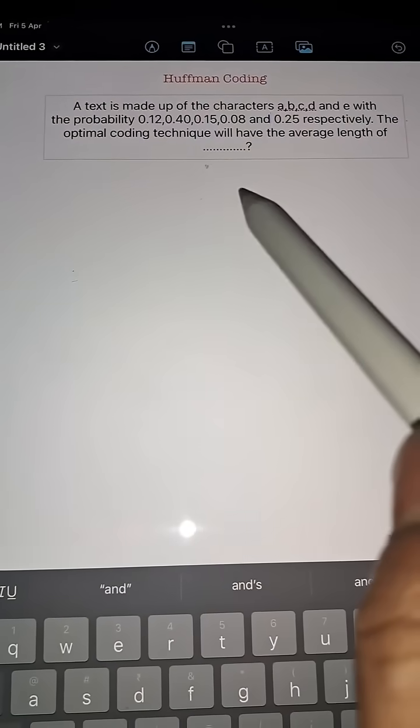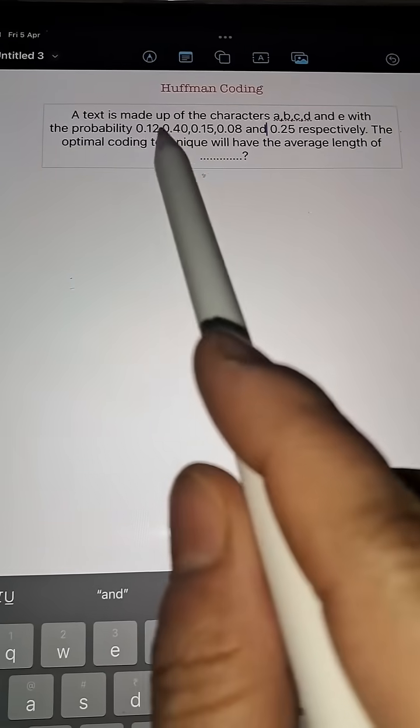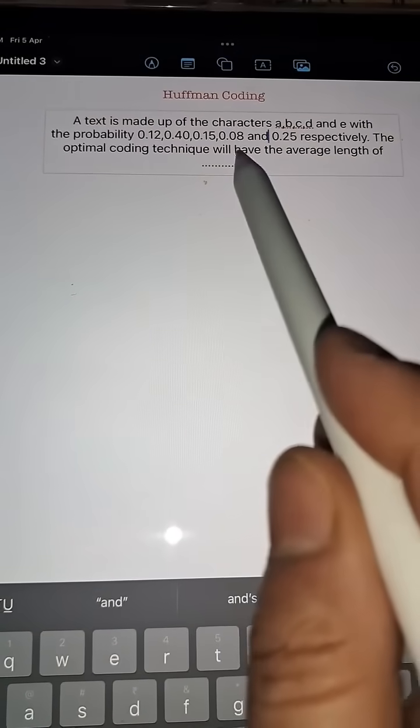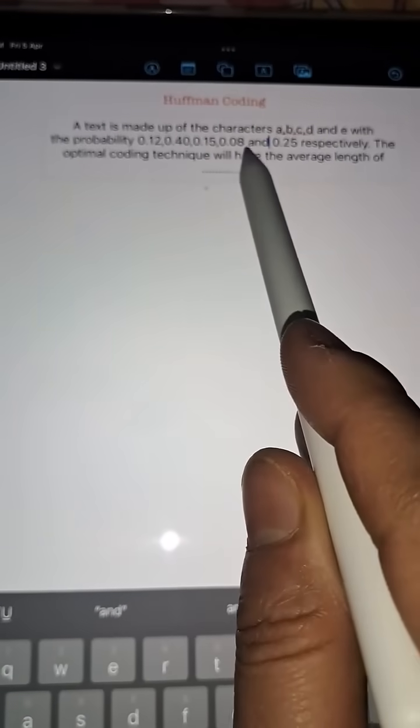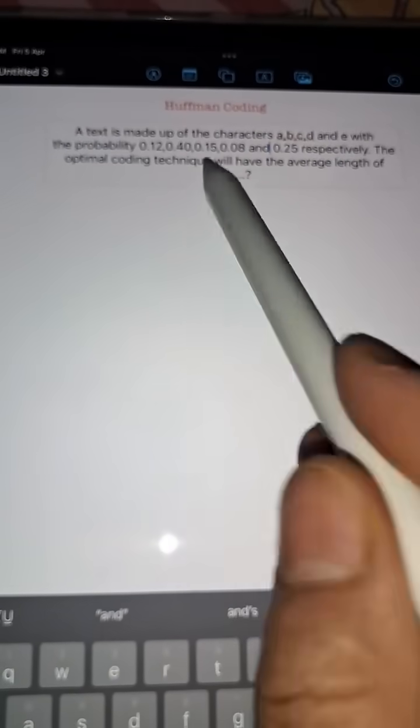Let us understand how to solve such type of question from the topic Huffman coding. So first you are going to see which one is the least frequency. So here you will see 0.08 and 0.12 is the least one. So write it down in the bottom and then create a ladder.